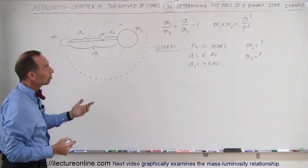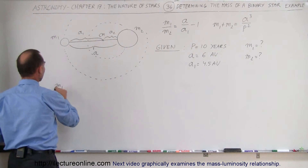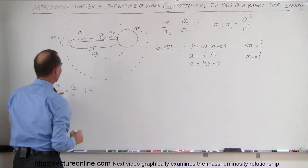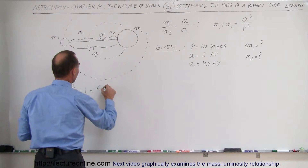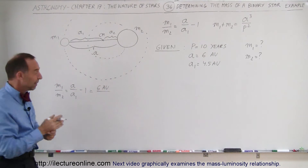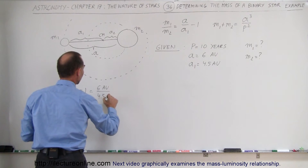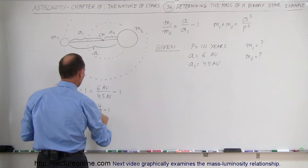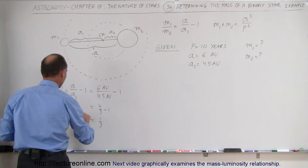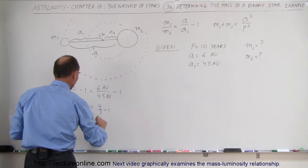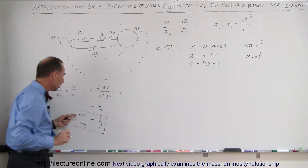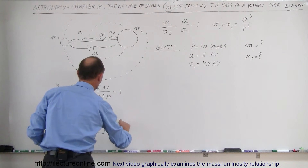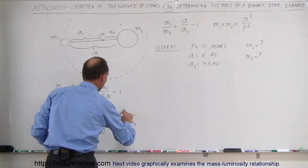First, we find the ratio of the two stars. M1 divided by M2 equals A divided by A1, minus one. A is 6 astronomical units, divided by 4.5 astronomical units, minus one. Six divided by 4.5 is four-thirds, and four-thirds minus one is one-third. So the ratio of the small mass to the large mass is one-third — the small star has one-third the mass of the big star. So M1 equals one-third M2.